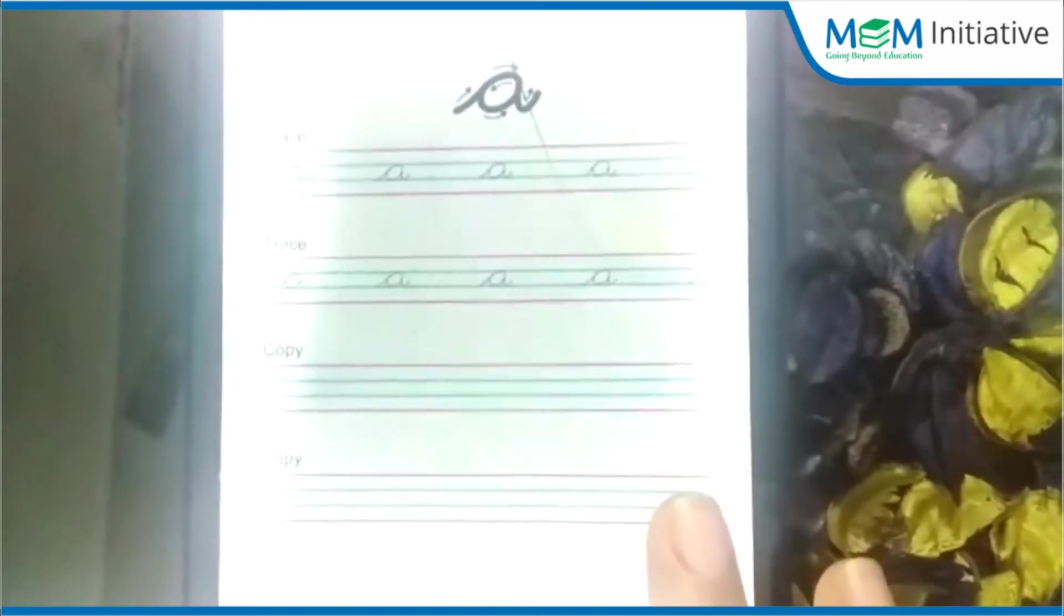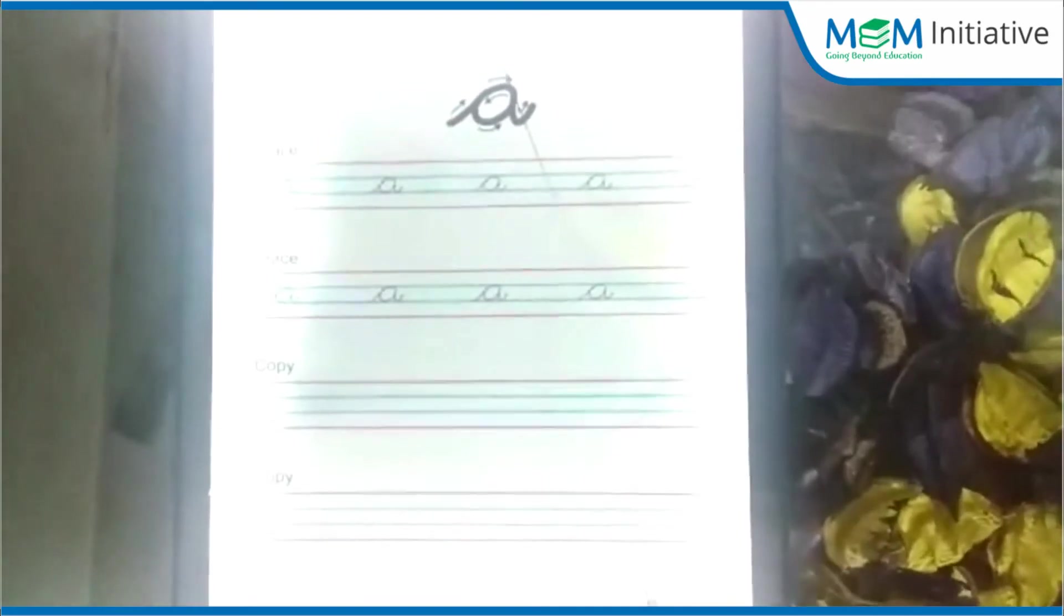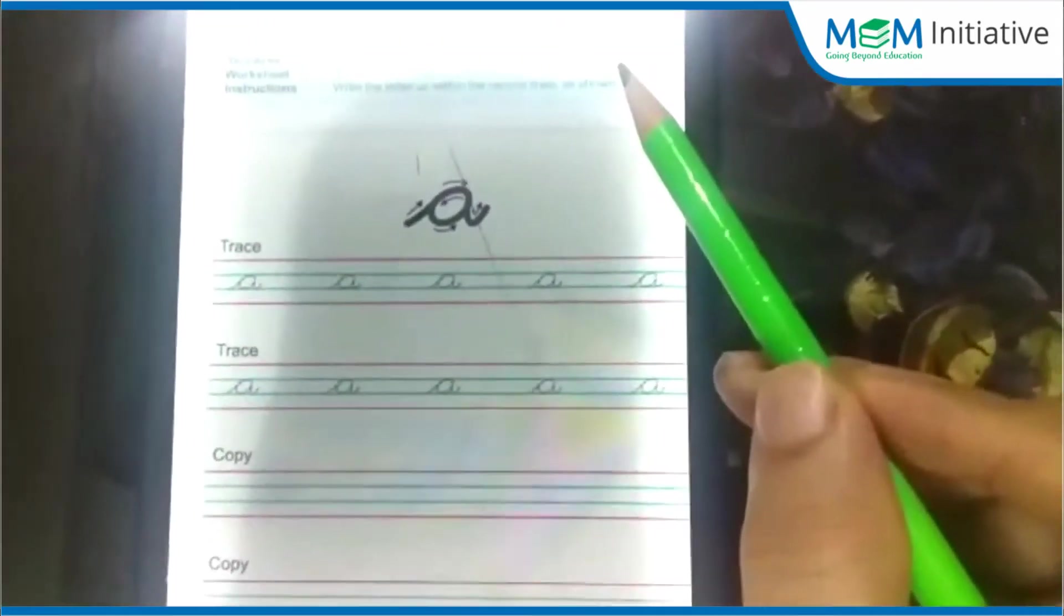So children, this is our worksheet, and here we will practice how we write A. And here we can write the date.